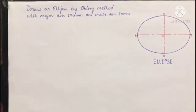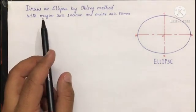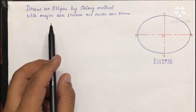Hello students, in the previous lecture we have seen ellipse by concentric circle method. So now we start today with ellipse by oblong method. Let us take a question: draw an ellipse by oblong method with major axis 120 millimeter and minor axis 80 millimeter.